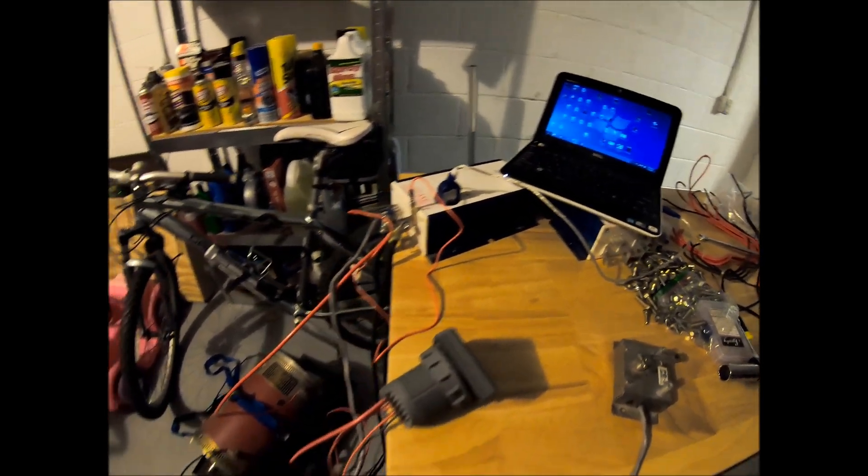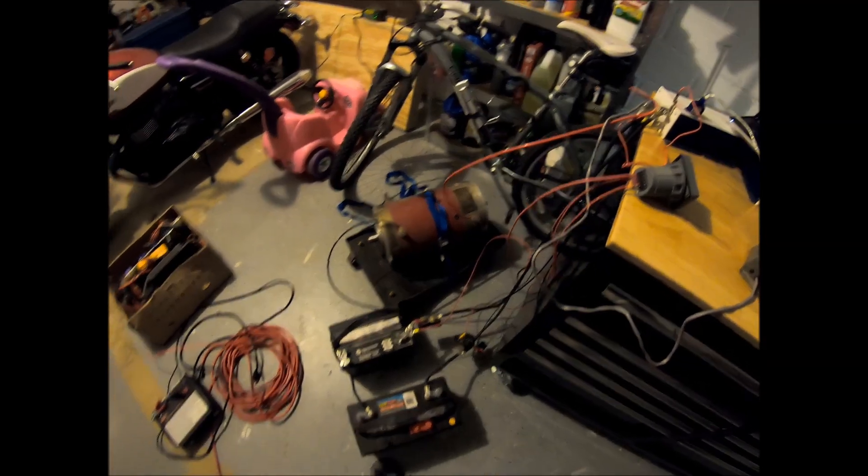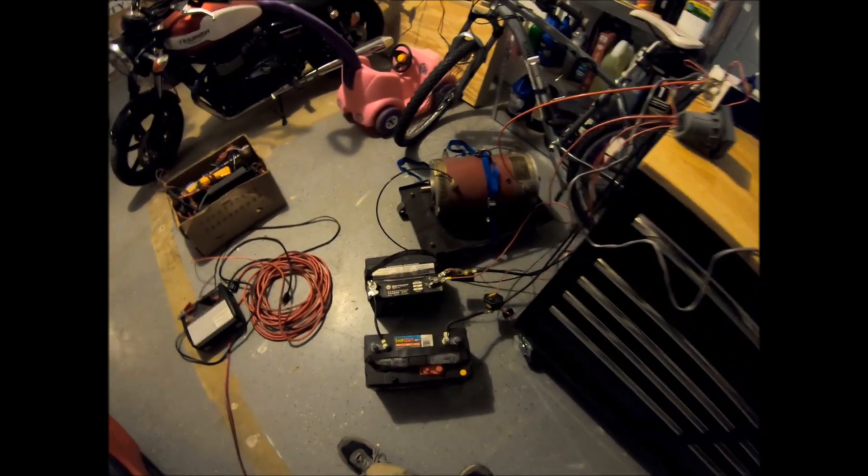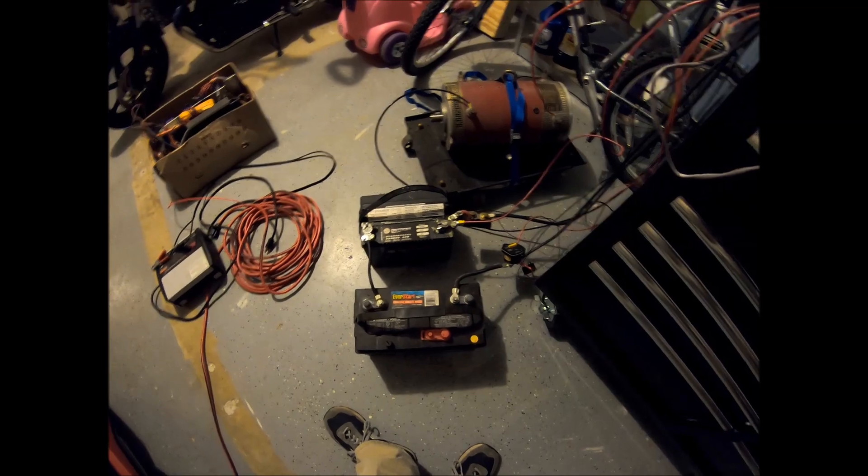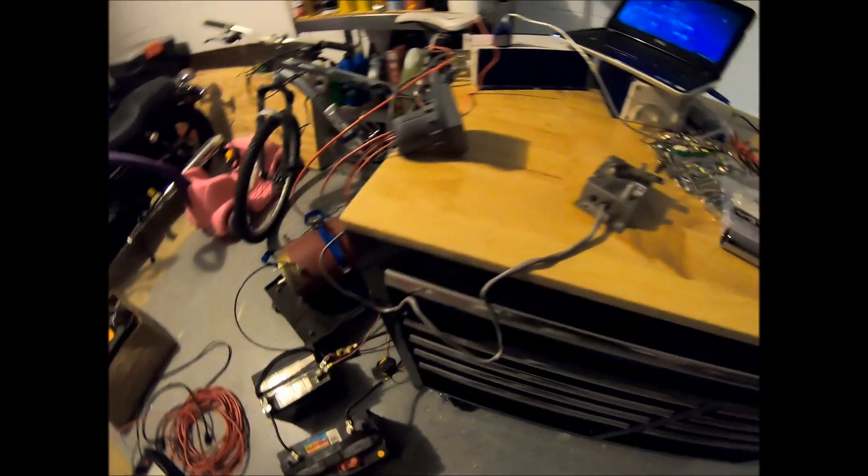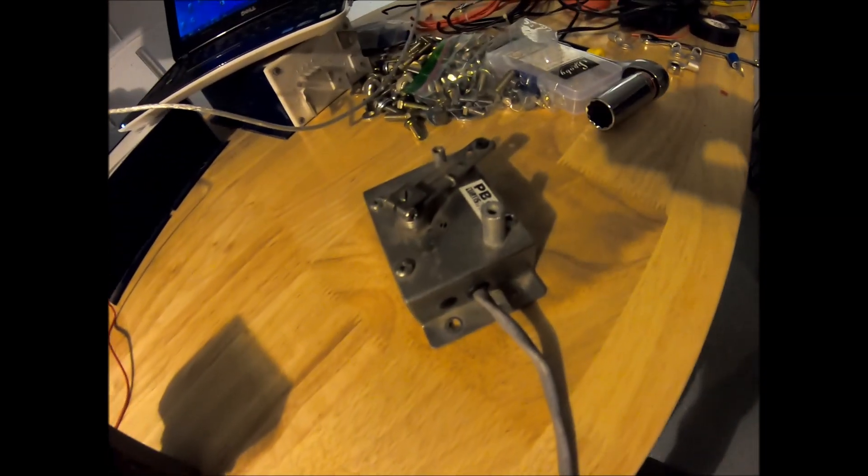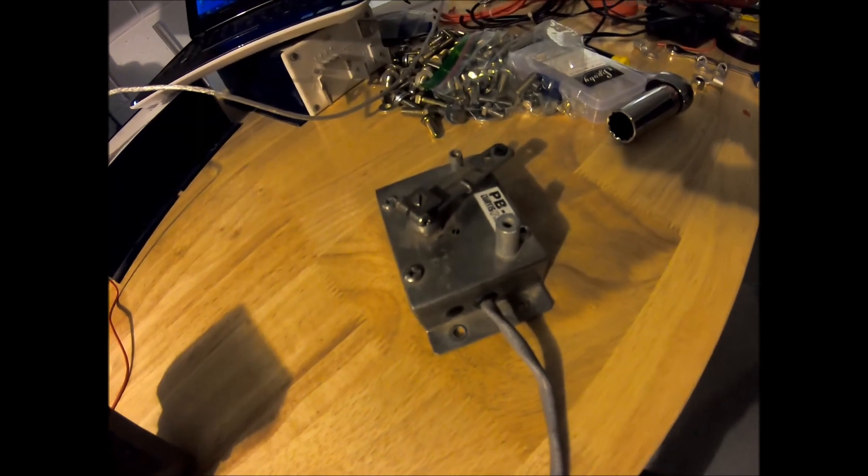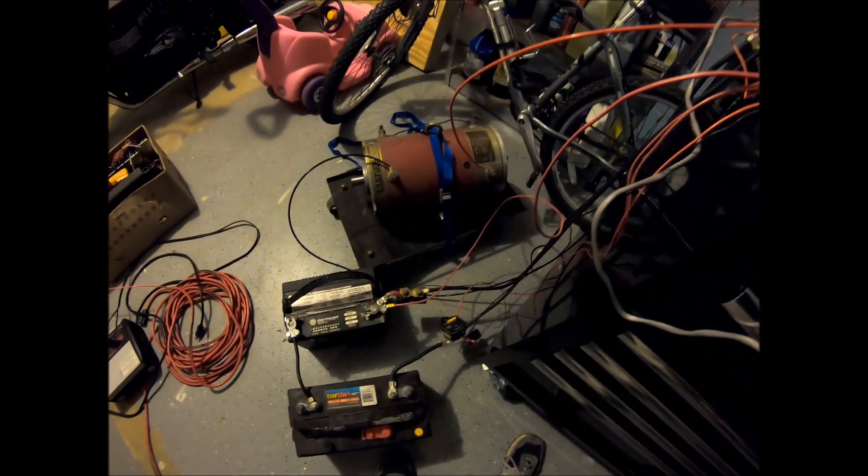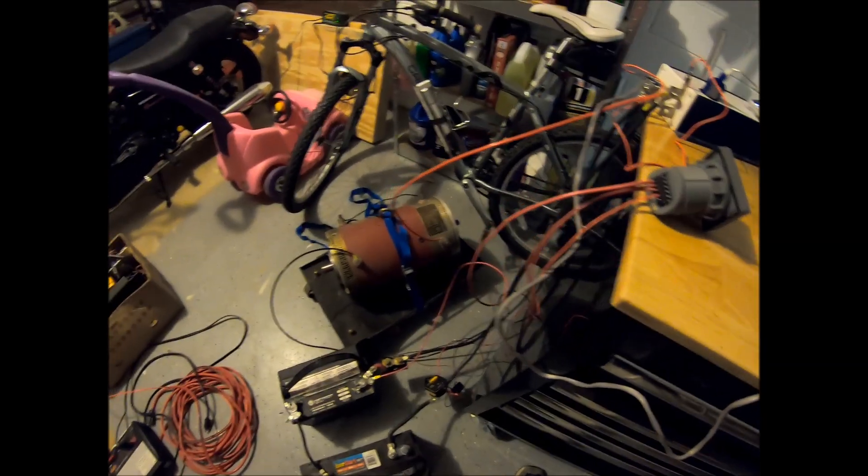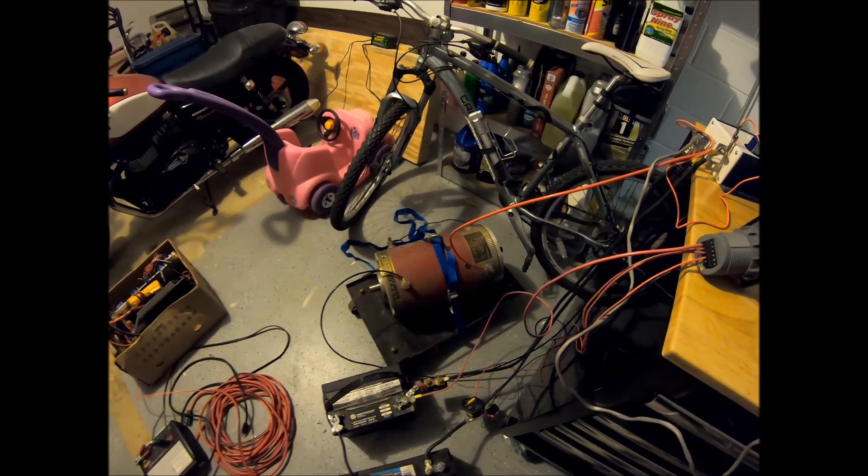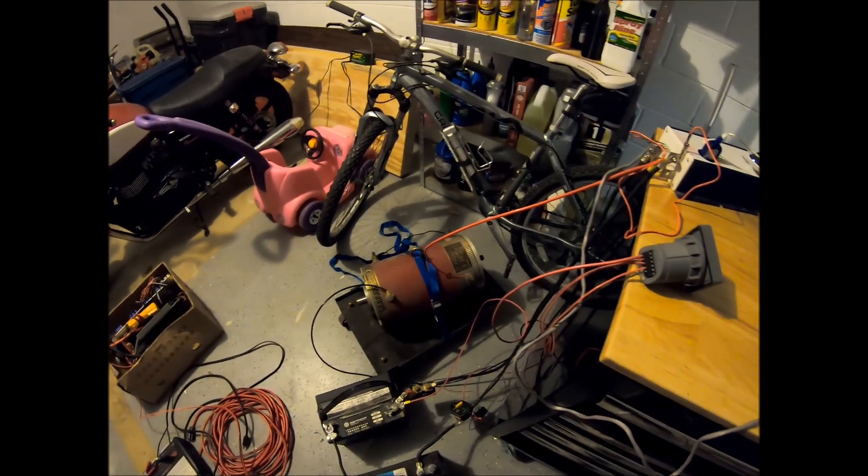So I quickly threw up a little test setup with two 12 volt batteries that I had laying around, and I got the good old Curtis pot box throttle here. I put a shunt and a breaker in and some really ghetto wiring. If you think this looks kind of half-assed, it's because it definitely is.